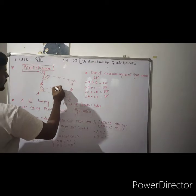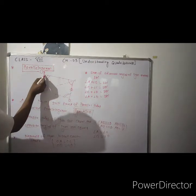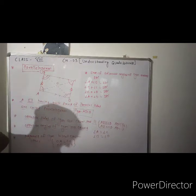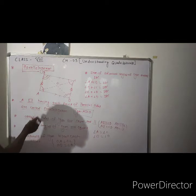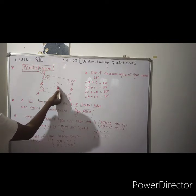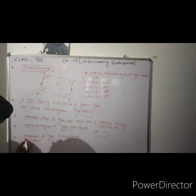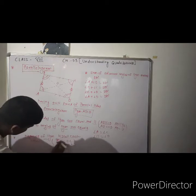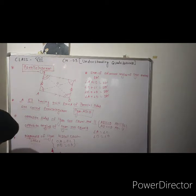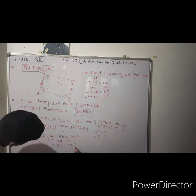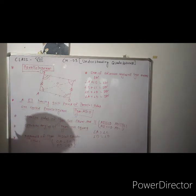Next, diagonal AC and diagonal BD intersect at O. There is also one property of a parallelogram: the diagonals of a parallelogram bisect each other. So we can write OA equal to OC and OB equal to OD.